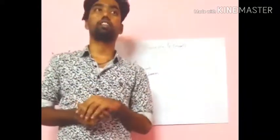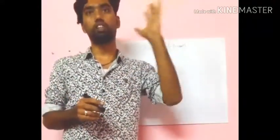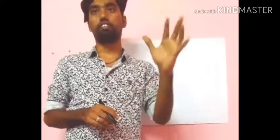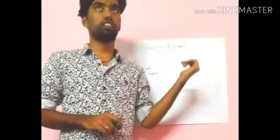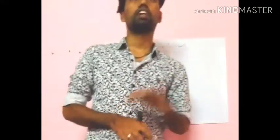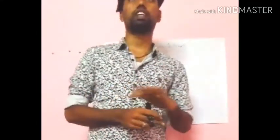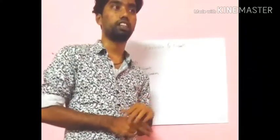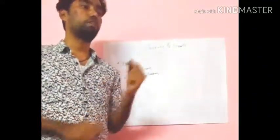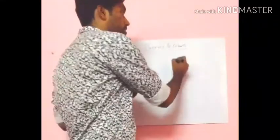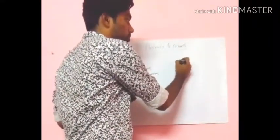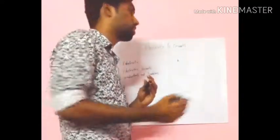First, we see what is electricity. We can't be able to see electricity, but we know there is electricity in our home. In our home, we use many electrical instruments like fan, TV, refrigerator, and so on. If we switch on, the instrument will be on - the light will glow, the TV will be on. We use electricity in our home. Simply, electricity has two terminals - one is positive and one is negative. That is electricity.